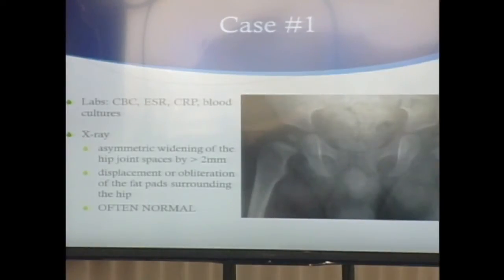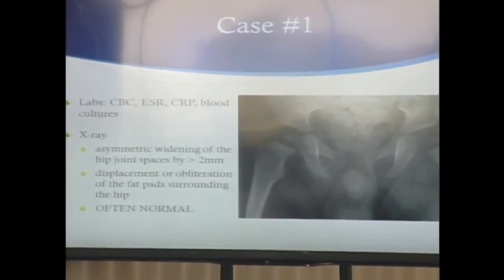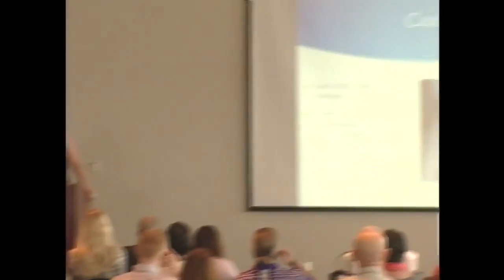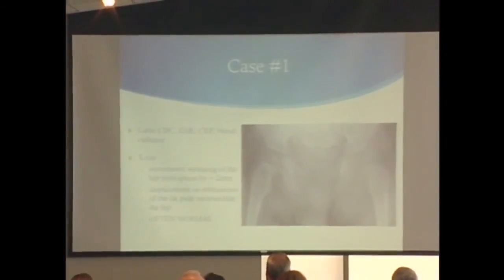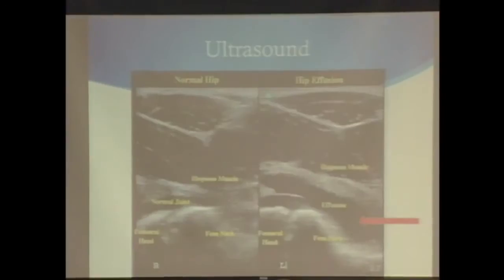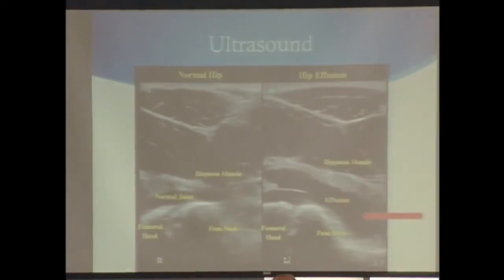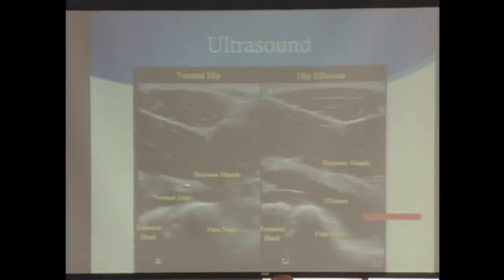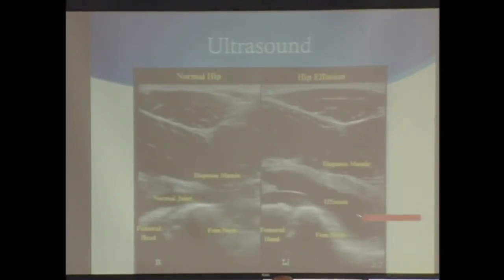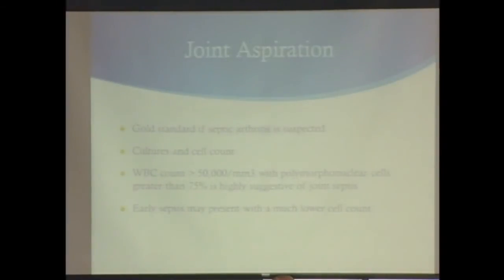X-rays are often completely normal, but you may see that the hip joint space looks wide. You can also see displacement or obliteration of fat pads, though that's a harder finding. The next step would be ultrasound. Normal joint versus increased fluid — the black on ultrasound is fluid, showing a joint effusion. Ultrasound is great for showing effusion, but doesn't tell us if it's normal joint fluid, purulent, or blood.